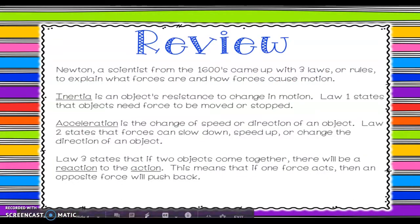In our previous lessons we learned about Newton. Newton was a scientist who came from the 1600s. He had three laws or rules that help explain why things move or how things move. His first law is the law of inertia — an object's resistance to change in motion. This states objects need force in order to be moved or stopped. Law number two is acceleration — the change in speed or direction of an object — which states that forces can slow down, speed up, or change the direction of an object. Newton's third law was action and reaction: if two objects come together there will be an action and for that action there will be a reaction, meaning one force acts and then an opposite force will push back.